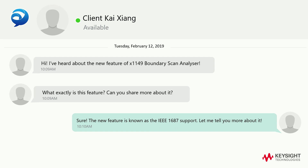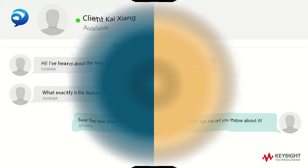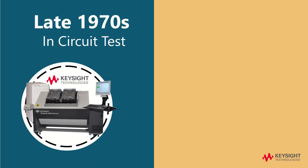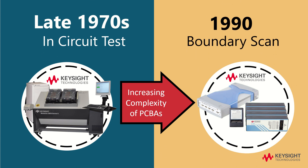However, before we dive into the concepts of what IEEE 1687 is all about, let me share with you the context of how Boundary Scan came about and why we should all appreciate this feature. Since the late 1970s, in-circuit test has been the prime technology to conduct structural tests. However, with the rise of product miniaturization and increasing complexity of PCBAs, the technology has evolved from in-circuit test to boundary scan.